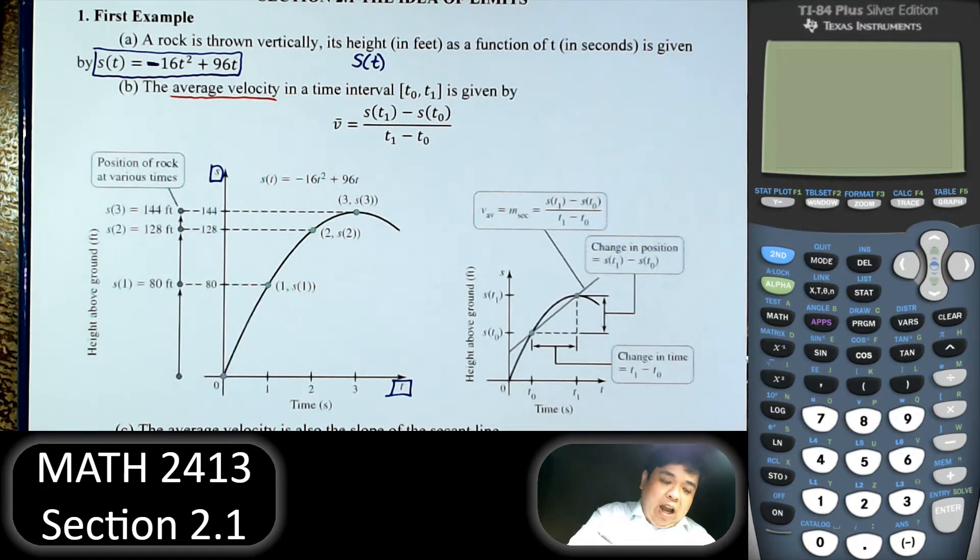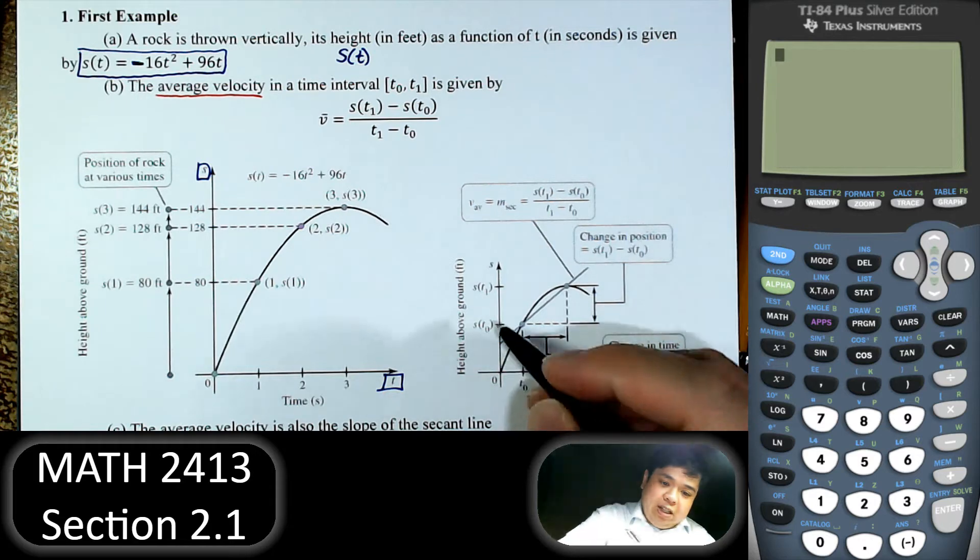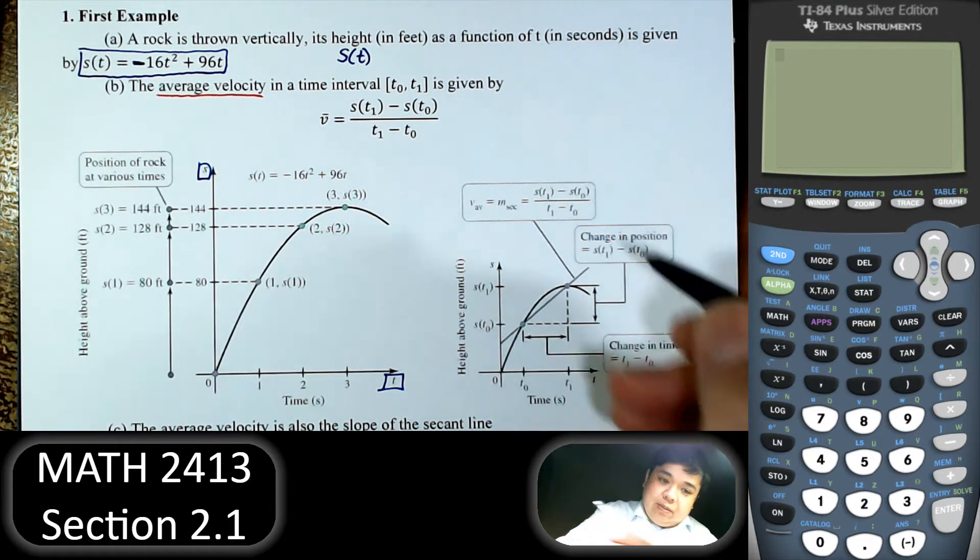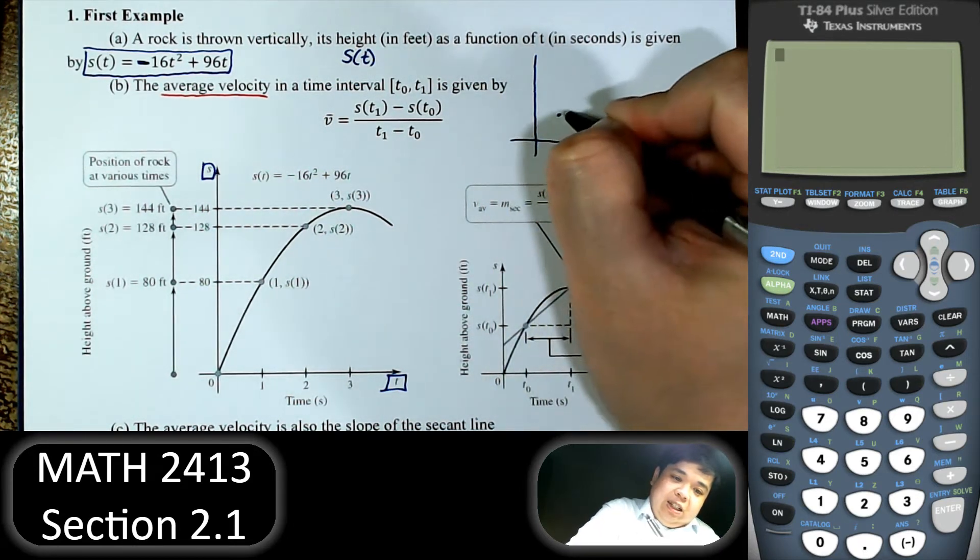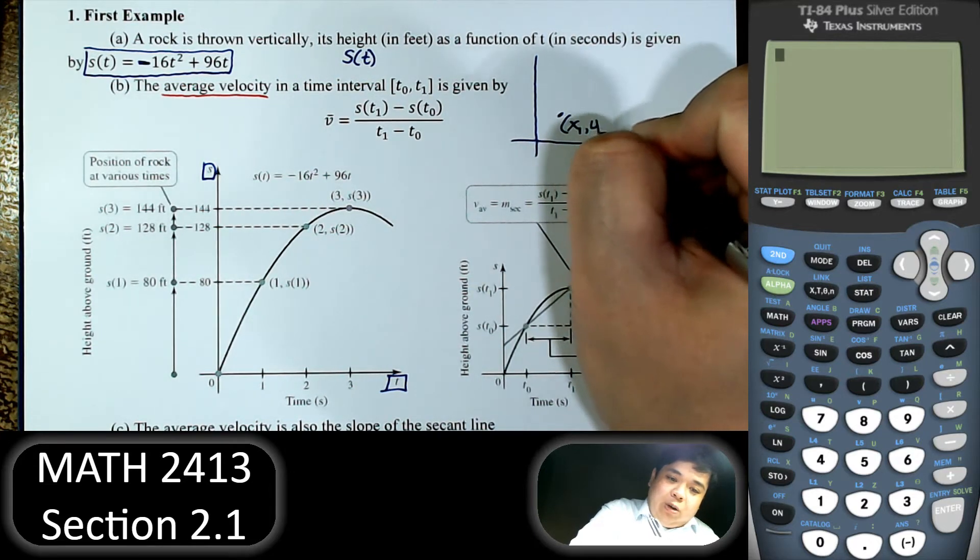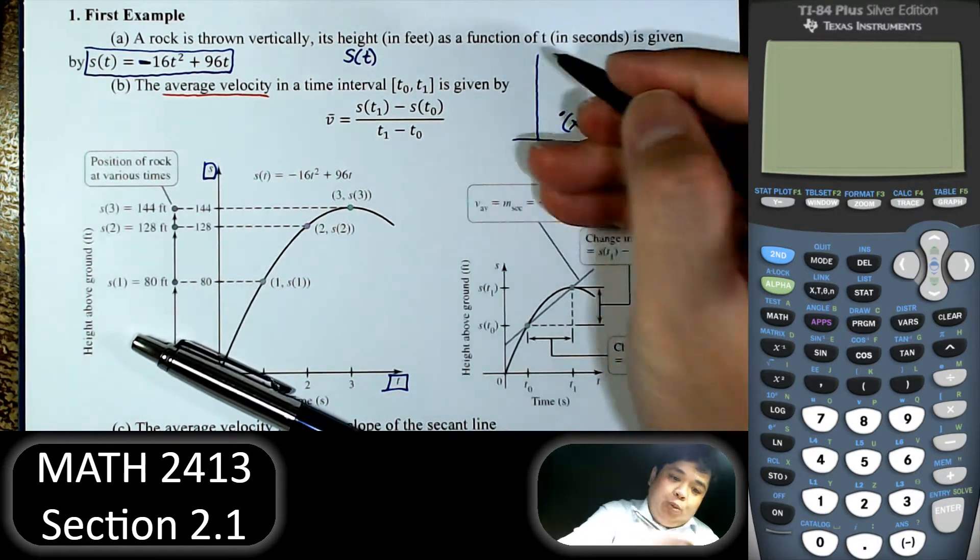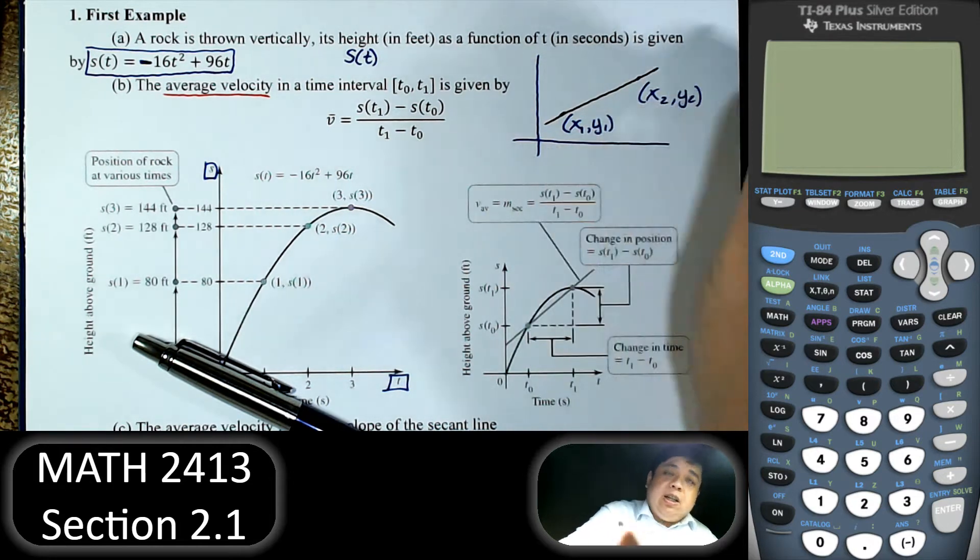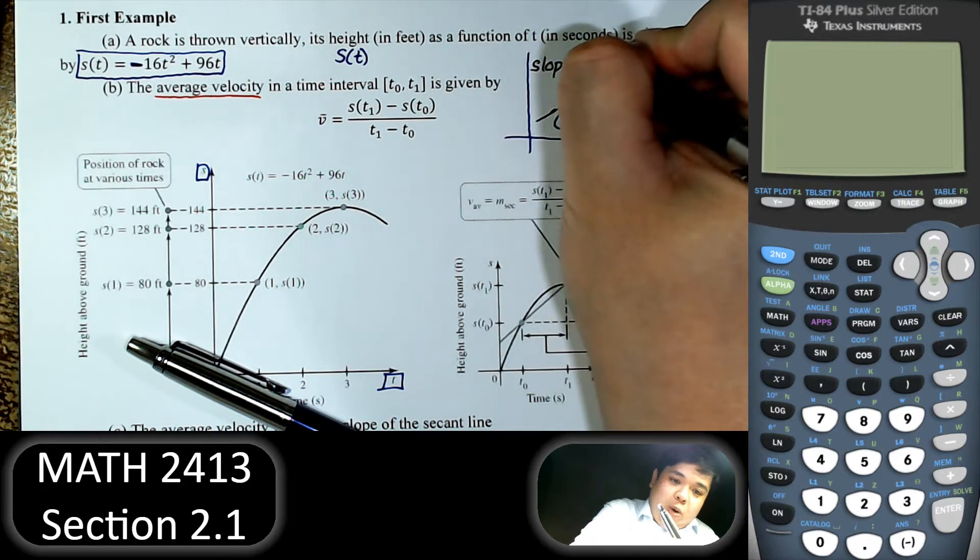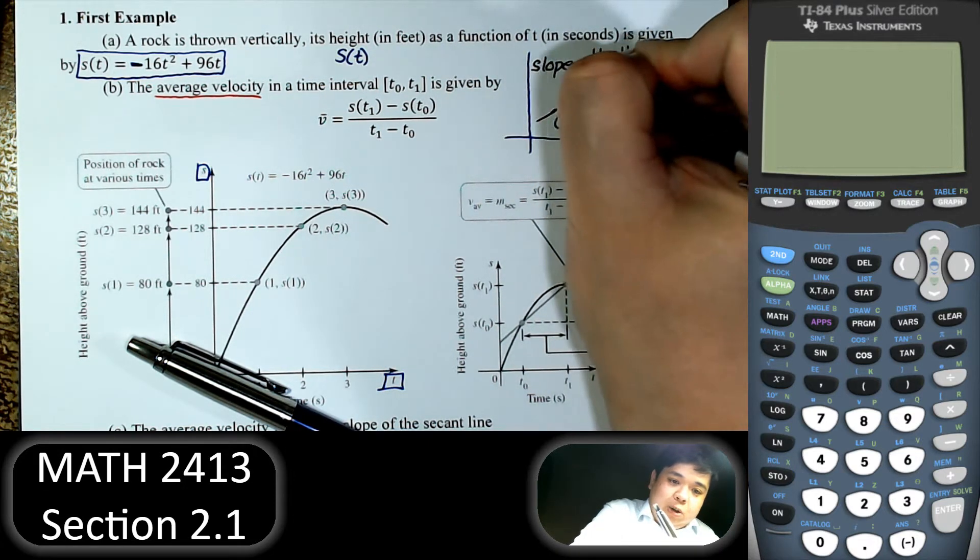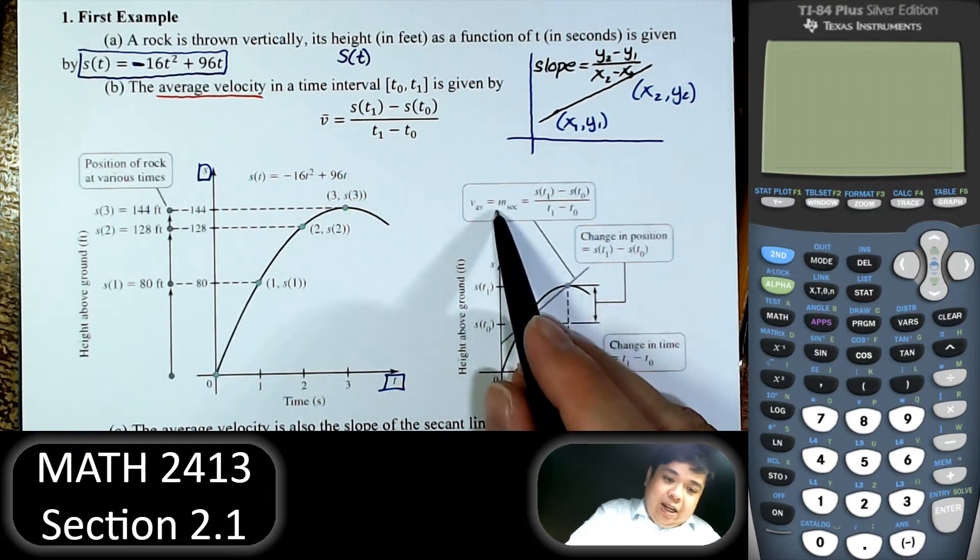So if we want to find the average velocity, this is exactly the slope of the secant line. Let's just review what we have in high school. Let's say we have two points, x1 and y1, and then x2 and y2. If we run a line connecting them, the slope is given by the change in y.